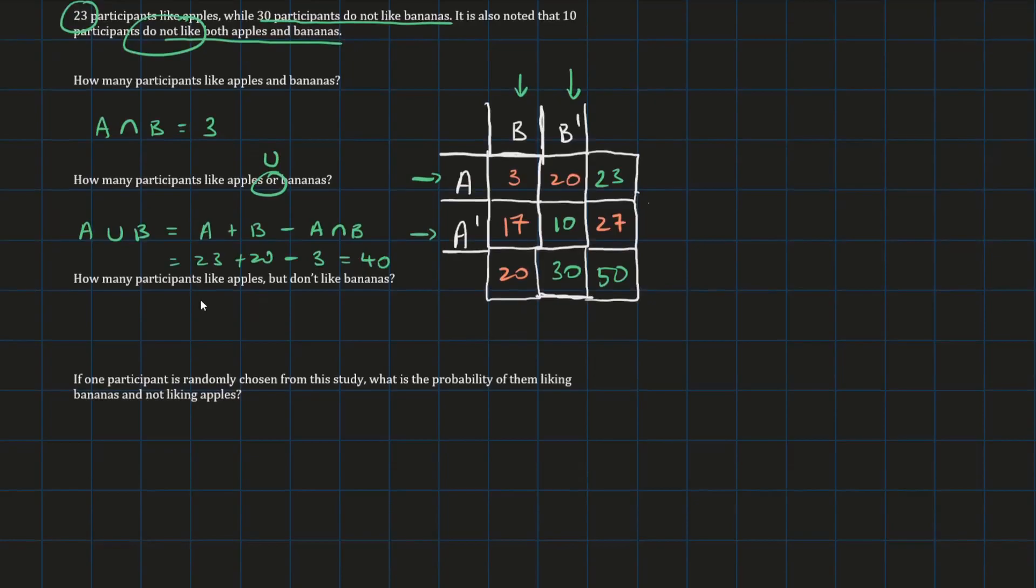Now, how many participants like apples, but don't like bananas? This would be A intersection B dash. It's the intersection because both of them have to happen in the way that this question is worded. They like apples, but they don't like bananas. It kind of implies that both need to happen, which implies intersection. So it's A intersection B dash, which is 20.